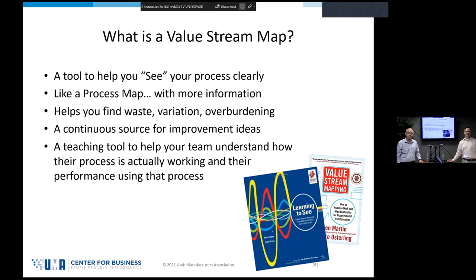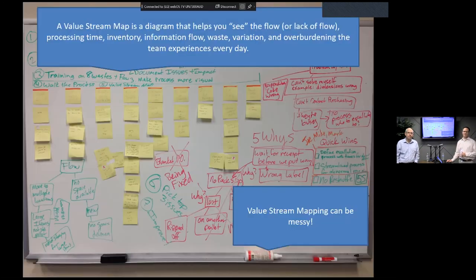We're doing value stream mapping to help us see the process. A value stream map is a variant on a basic process map. If you're looking for books, 'Learning to See' was the original book written on value stream mapping — it teaches the traditional approach. We're going to teach you a simplified approach. Here's an example: it's a bunch of sticky notes on the wall, and those sticky notes show the process steps, with all the waste and variation and overburdening noted below.